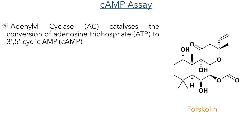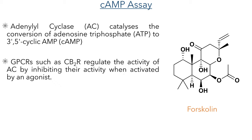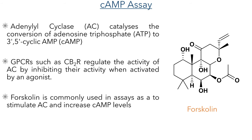Now let's look at the assays the researchers used to study this receptor. The first is the cyclic adenosine monophosphate assay, which looks at the activity of adenylyl cyclase — an enzyme that catalyzes the conversion of ATP to 3,5-cyclic adenosine monophosphate. This AC enzyme is regulated by the activity of GPCRs such as the CB2 receptor, which inhibits its activity when activated by an agonist. In these assays, forskolin is used to stimulate the enzyme and increase the levels of cyclic AMP.